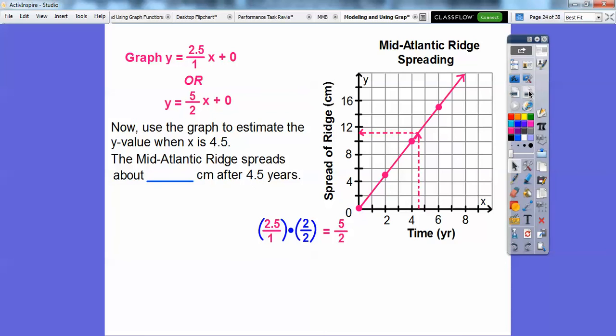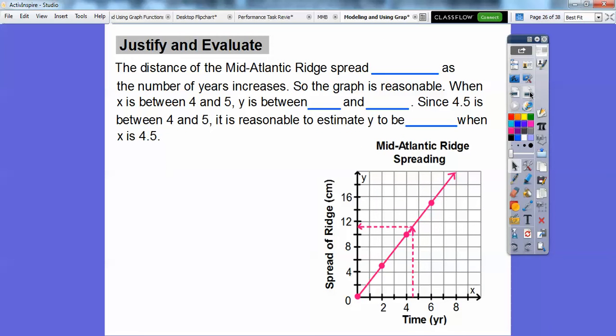We're going to estimate it. The Mid-Atlantic Ridge spreads about 11.25 centimeters. If you said 11 centimeters or 11.5 centimeters, I would take that, and I'm sure your teacher would also. It's kind of hard to see right here. So about 11.25 centimeters after 4 and a half years or 4.5 years. So, and it says justify and evaluate. Well, the distance of the Mid-Atlantic Ridge spread increases as the number of years increases. So the graph does seem reasonable because when it means that when this number gets bigger, this number gets bigger and that just means your graph is going up right there.